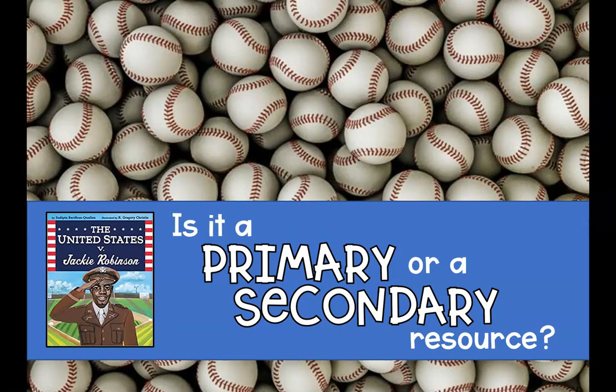Mr. Robinson lived a long time ago. Ms. Olson was a second grader when Mr. Robinson passed away in 1972 or 1973. So how do we know about his life? How do we know what happened? Remember a few weeks ago when we talked about primary and secondary resources? People have saved documents and recorded history about things that have happened, just like in this biography. We're going to go through some pieces of evidence and see which ones are primary documents and which ones are secondary.